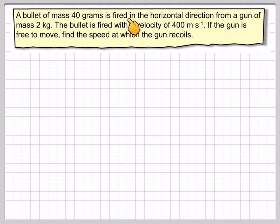A bullet of mass 40 grams is fired in the horizontal direction from a gun of mass 2 kilograms. The bullet is fired with a velocity of 400 meters per second. If the gun is free to move, find the speed at which the gun recoils.